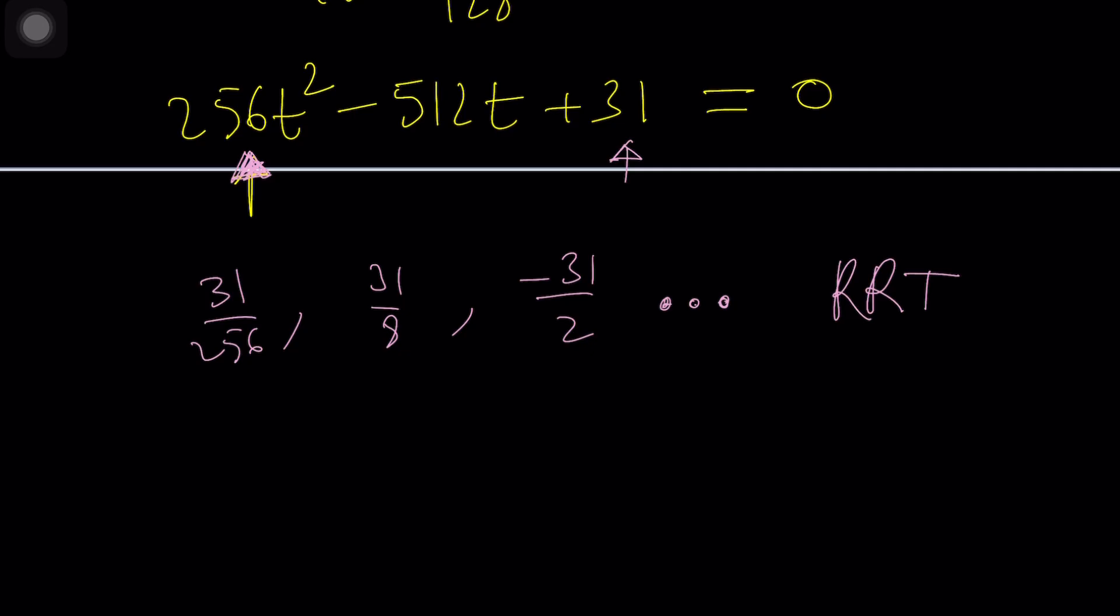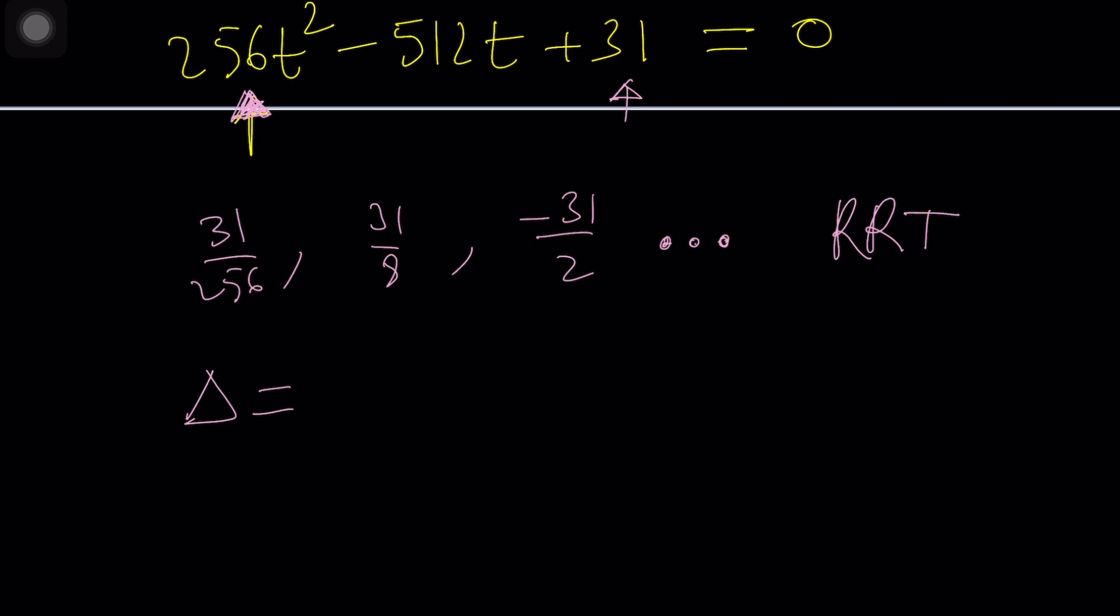So that's a lot of choices, maybe I should use the quadratic formula. Let me try finding the discriminant because that will give me a perfect square hopefully which means we have rational solutions. Negative b plus minus the square root of b squared minus 4ac.